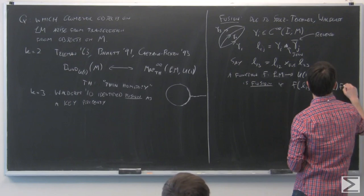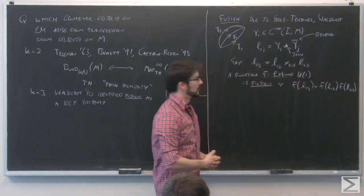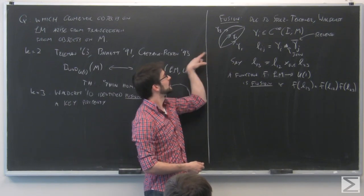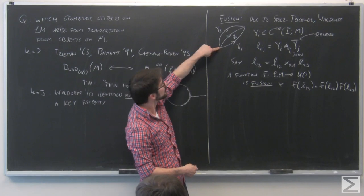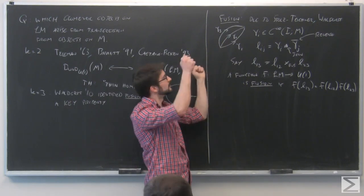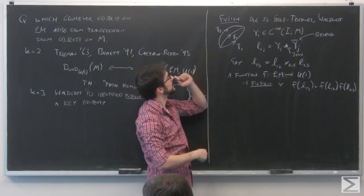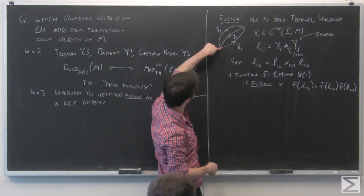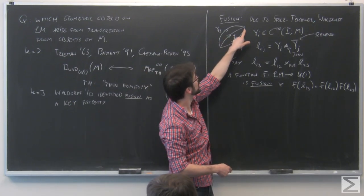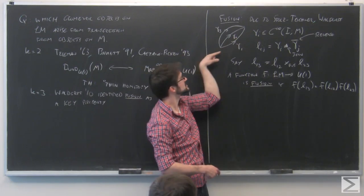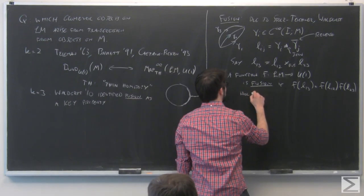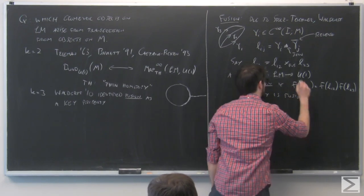A U(1)-valued function is fusion if its value on L_13 equals the product of F(L_12) and F(L_23) — it's multiplicative under this product map. Notice that holonomy has this property. If I take holonomy of a line bundle over M and do parallel transport along gamma_1 then backwards along gamma_2, then follow that with parallel transport along gamma_2 forward and backwards along gamma_3, that's the same as parallel transport along gamma_1 and then gamma_3, because I went forwards and backwards along gamma_2. So holonomy is a fusion function.